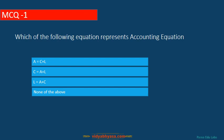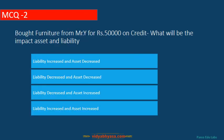MCQ Question 1: Which of the following equations represents the accounting equation? The right answer is: Asset equals Capital plus Liability. MCQ Question 2: Bought furniture from Mr. Y for rupees 50,000 on credit. What will be the impact on asset and liability? Furniture is an asset account so asset is increasing, and buying on credit means liability is also increasing. The answer is: liability increased and asset increased.